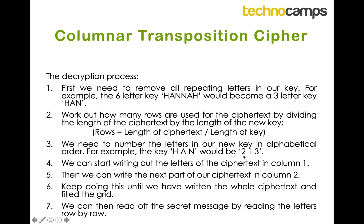We then start writing out the letters of the cipher text into the columns always starting with column 1, writing out as many letters as we have rows. Then we write the next portion into column 2, then column 3, and so on for however many columns there are until the grid is full. Once that's done, the last step is exactly the same as before — we read off the secret message row by row, taking the letters for each row and working down the grid.